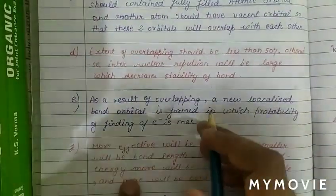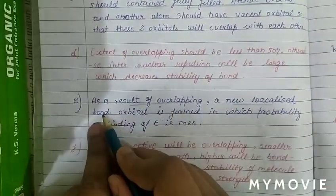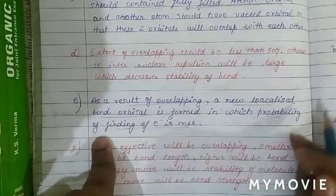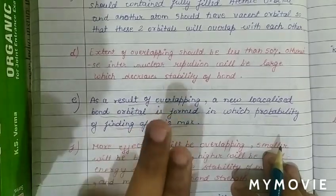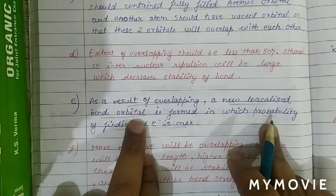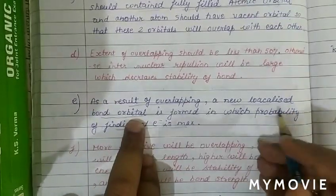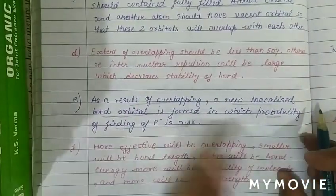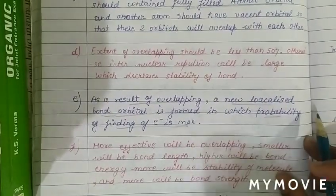As a result of overlapping, a new localized bond orbital is formed in which the probability of finding an electron is maximum. This new localized bond orbital forms after overlapping of atomic orbitals containing unpaired electrons with opposite spin.